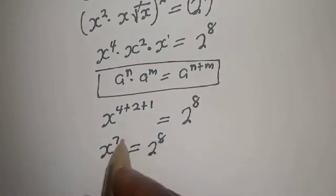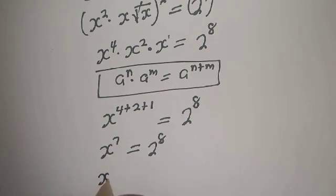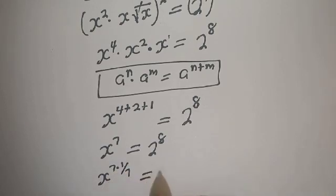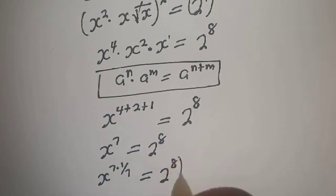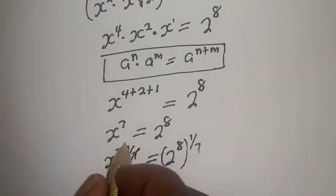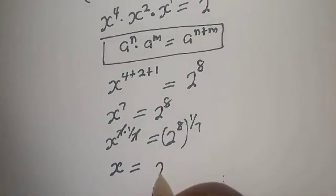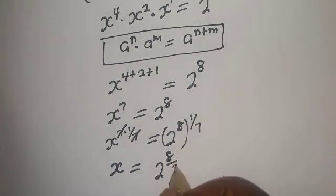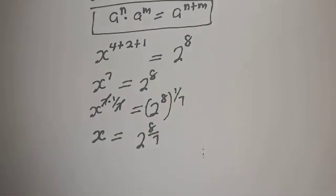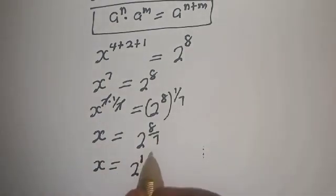We are looking for the value of s. Let's multiply the power of both sides by 1 over 7. That is s raised to power 7 times 1 over 7 equals 2 raised to power 8 times 1 over 7. This cancels to give s equals 2 raised to power 8 over 7.